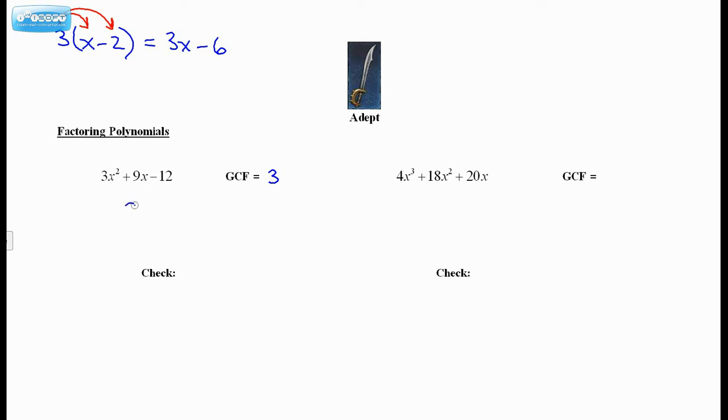So what we do is we write the 3 in front. Okay, and we just take the trinomial, and mentally, in our minds, we divide each term by a 3. So if I have a 3x², but I've divided off a 3, what's left? Just the x². Okay, next one, I have positive 9x. Well, if I've divided away a 3, what's left? 3x. Positive 3x. Okay. Next, I have negative 12. If I've divided out positive 3, what's left? Negative 4.